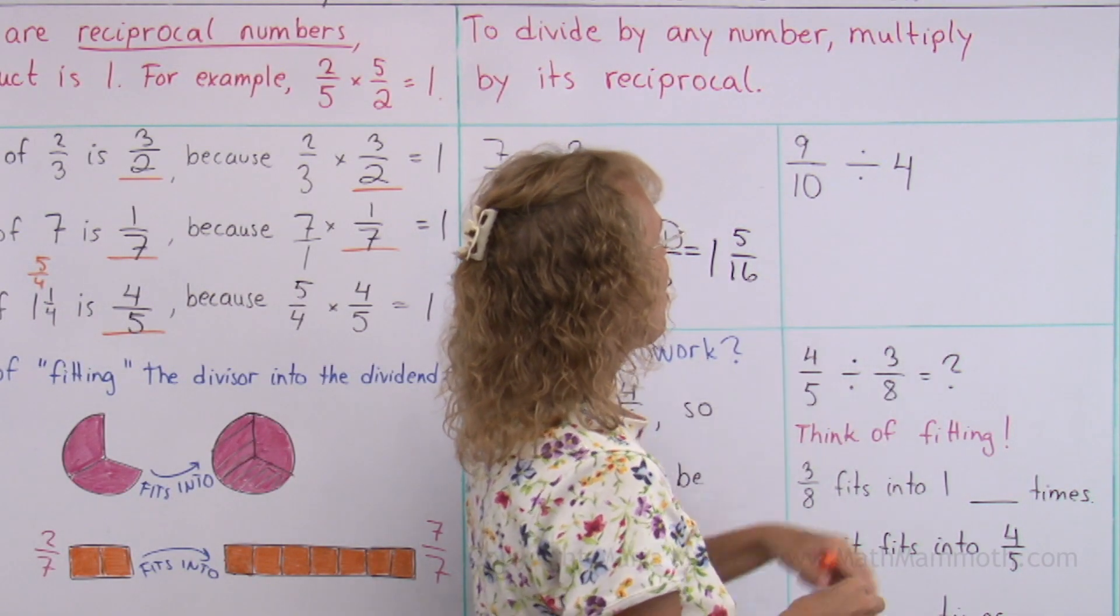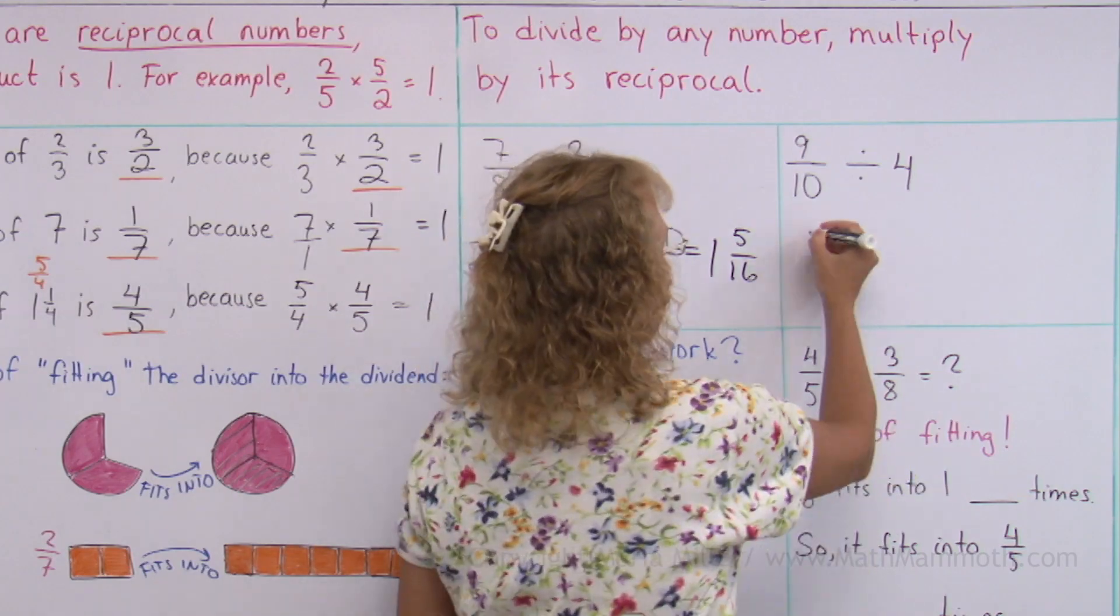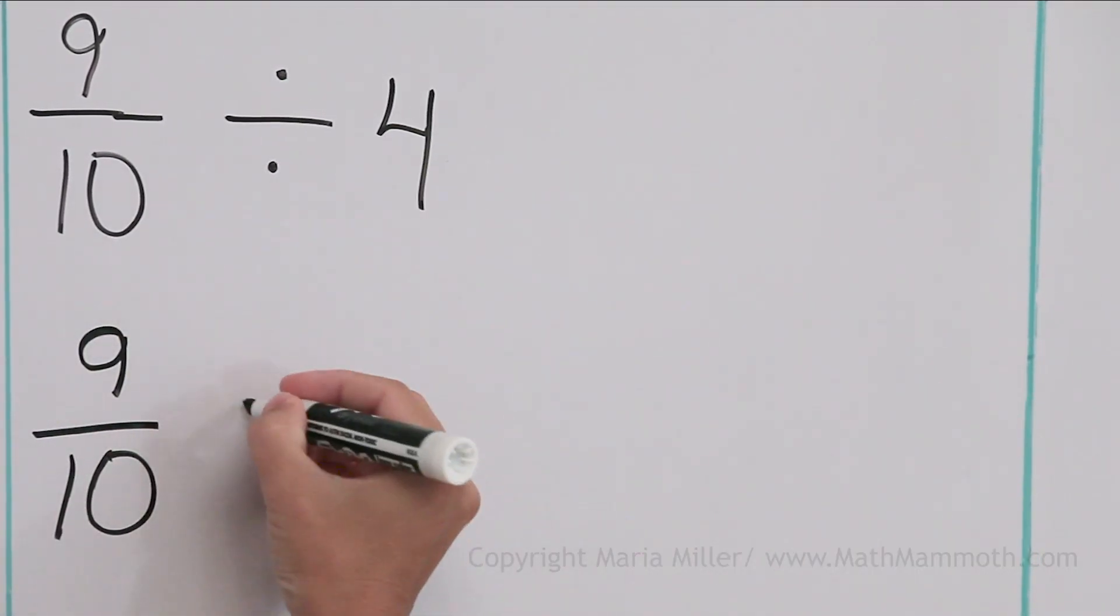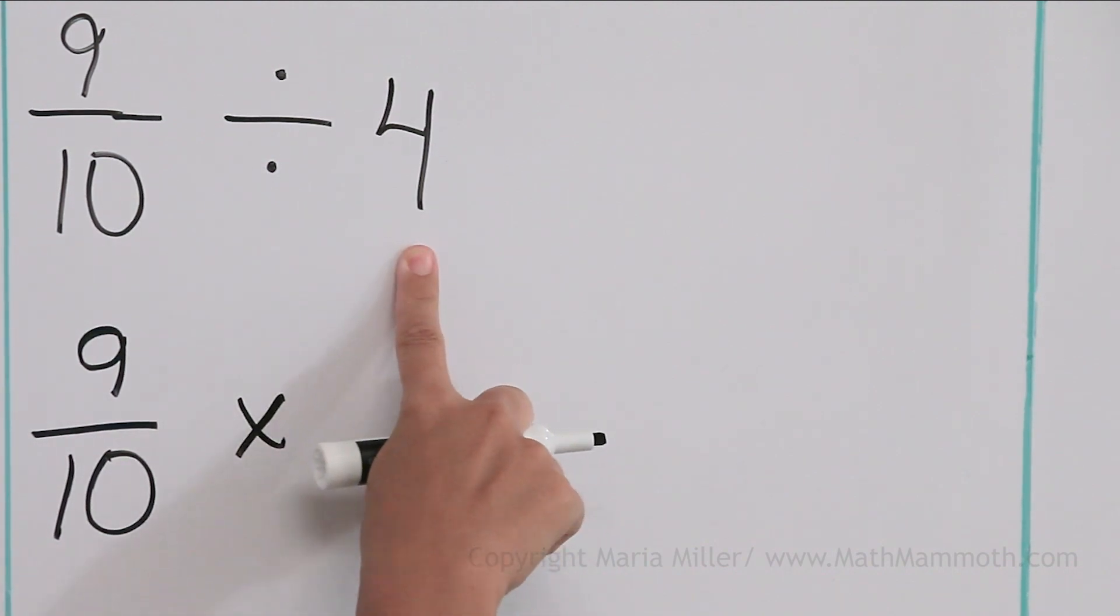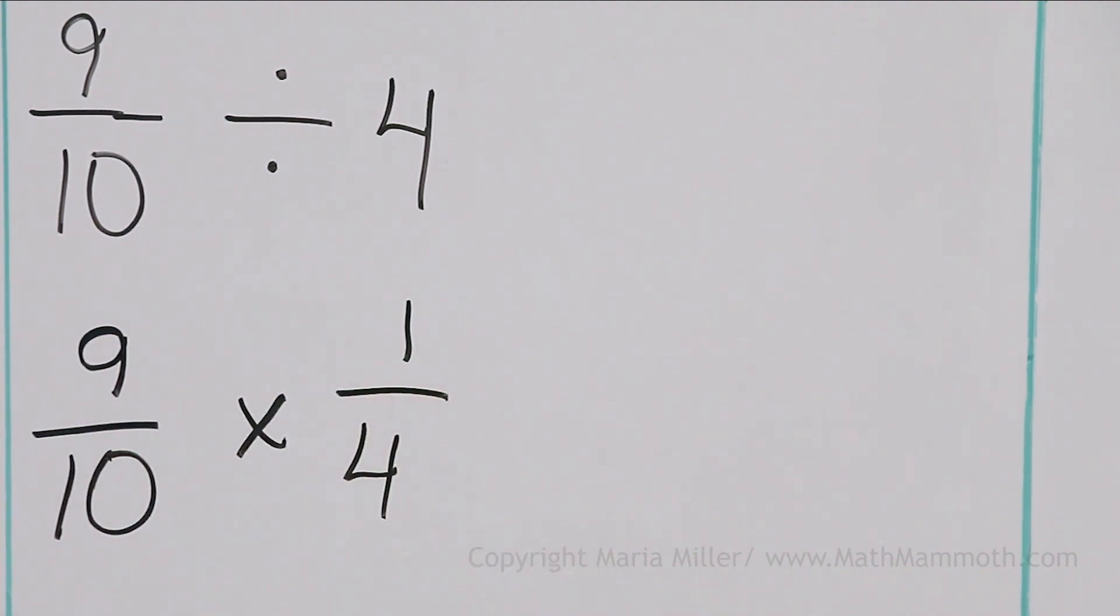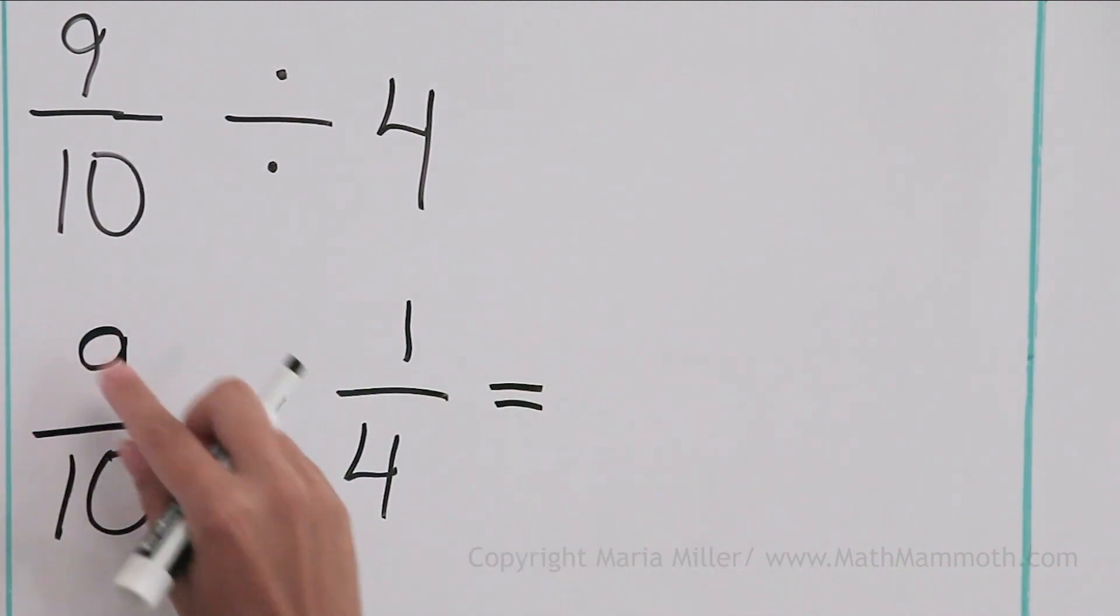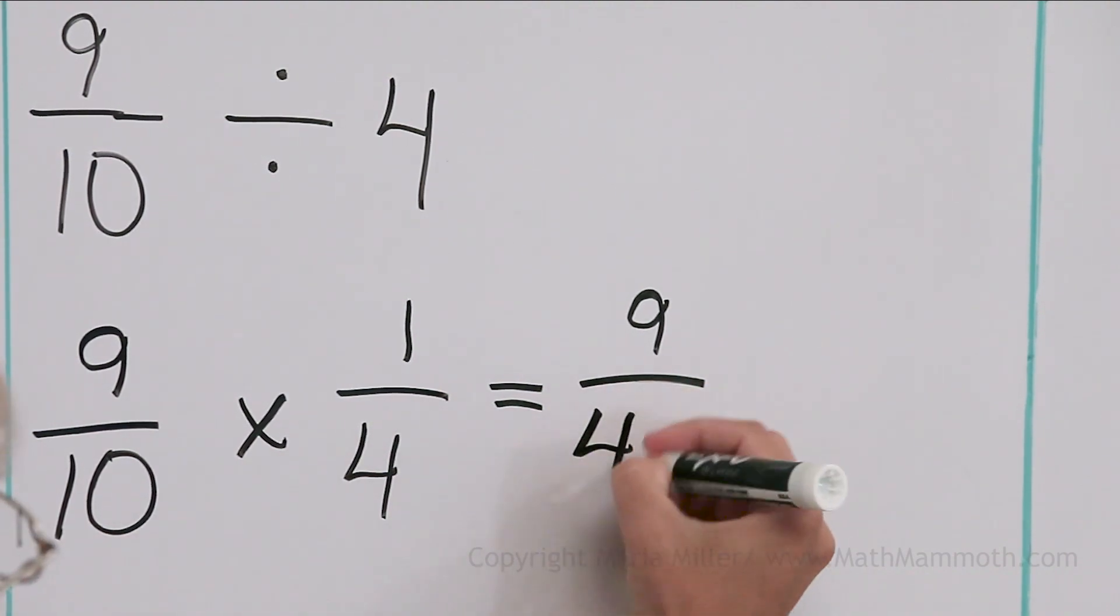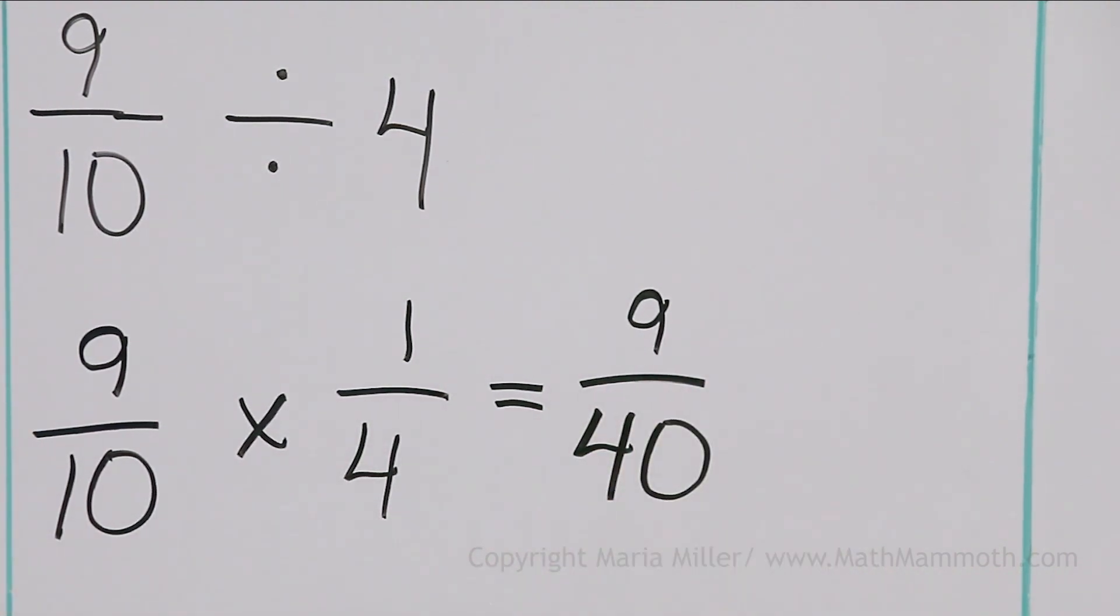9 tenths divided by 4. I do the same. This first fraction does not change. This changes into a multiplication. And now, I write the reciprocal of 4, which is 1 fourth. And then we multiply 9 times 1 and 10 times 4, which is then 9 over 40.